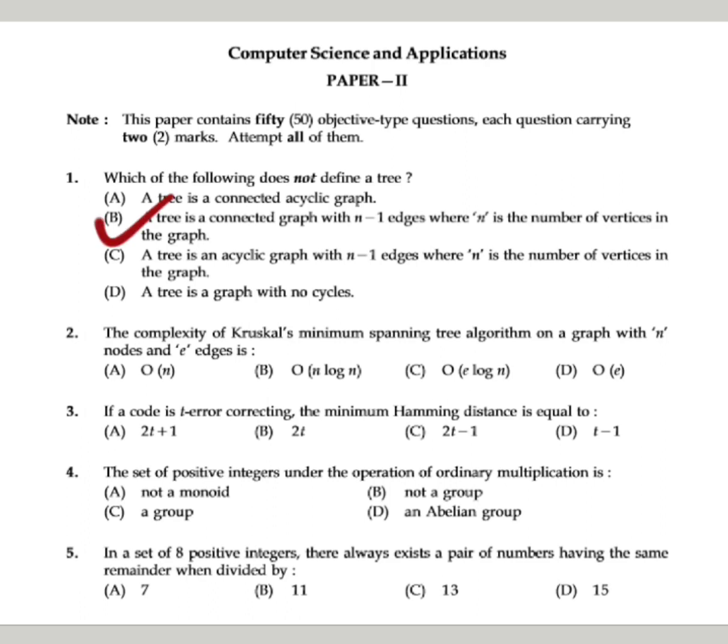Now let's go to the next question related to Kruskal's algorithm. If you remember, the minimum cost spanning tree has two algorithms: Kruskal and Prim. Kruskal is edge-based and the Prim algorithm is vertex-based. The complexity of Kruskal's minimum spanning tree algorithm on a graph with n nodes and e edges - so what is the complexity? There is a direct answer if you know it: that is e log n.